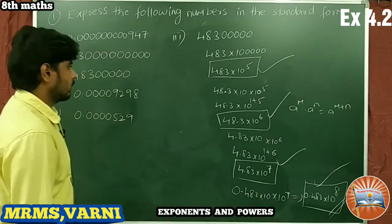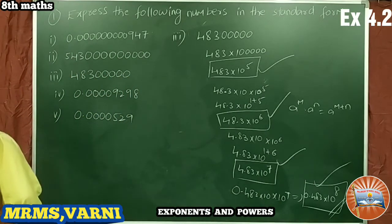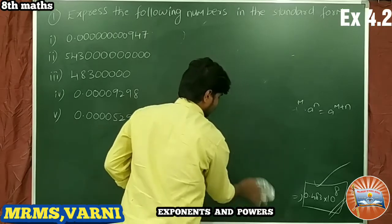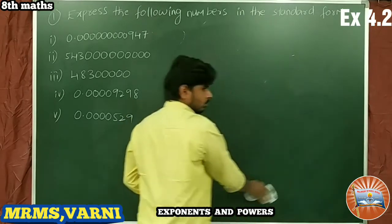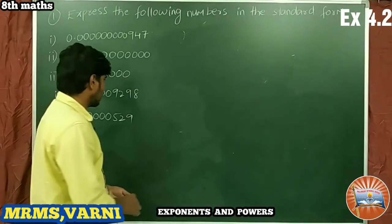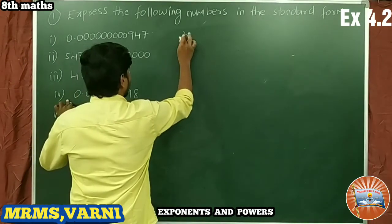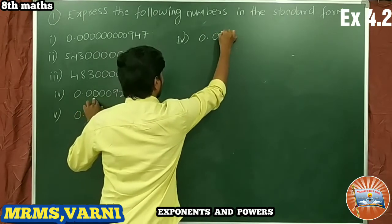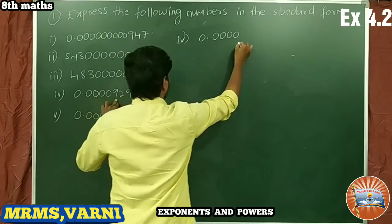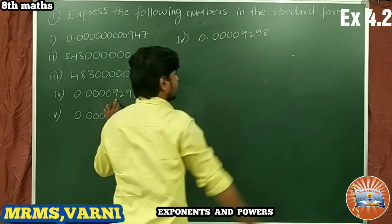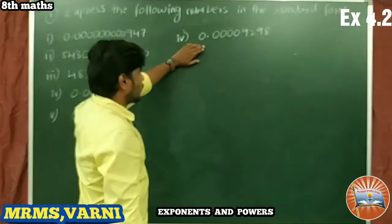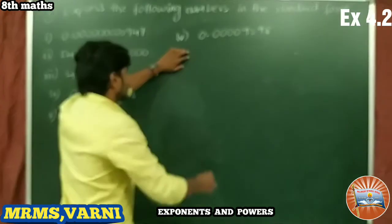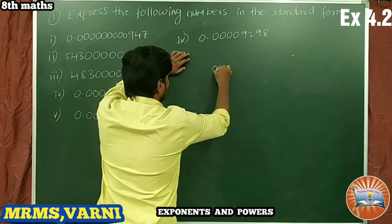Next, problem number 4: the given number is 0.000009298. How many decimal places are there after the decimal point? Count: 1, 2, 3, 4, 5, 6, 7, 8 — there are 8 decimal places.